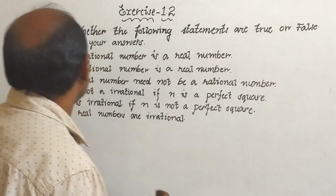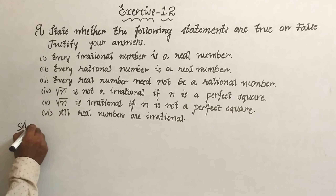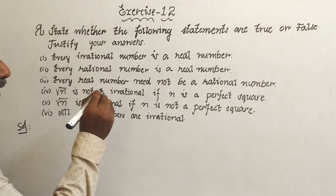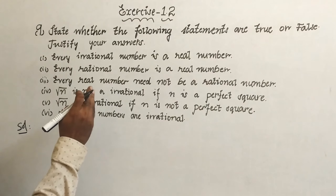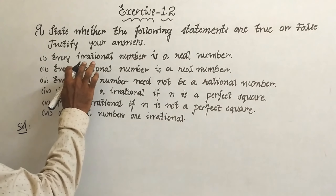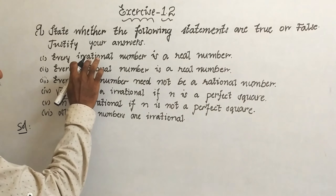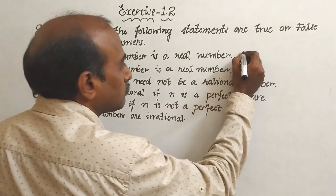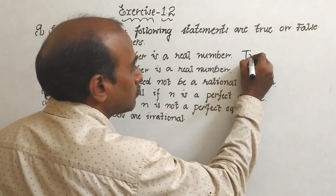Exercise 1.2, question number 9: whether the following are true or false — justify your answer. Problem 1: every irrational number is a real number. Irrational numbers are a part of the real numbers, therefore this is true.